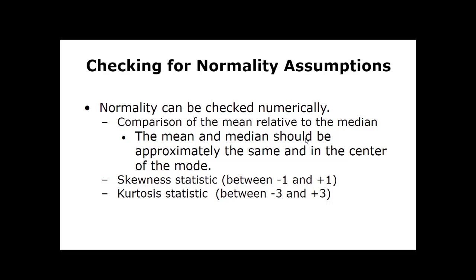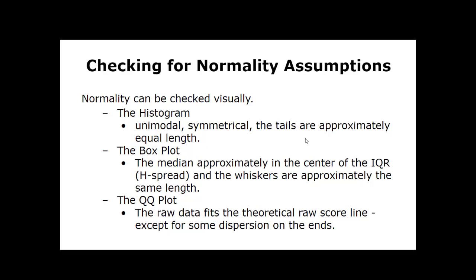Third, look at the kurtosis statistic — it should be between positive three and negative three. If it extends beyond that range, you cannot assume normality. You can also check normality visually using three types of graphs. First, the histogram should be unimodal and symmetrical, with tails of approximately equal length. Second, the box plot — the median should be approximately in the center of the interquartile range, and the whiskers should be approximately the same length.